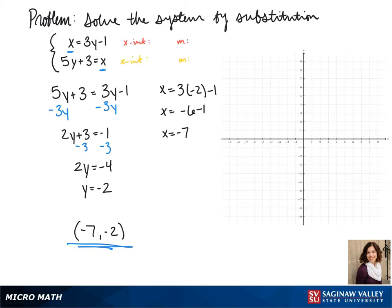We can see what our system looks like by graphing it. The easiest way to graph these equations, since they're already solved for x, is to find our x-intercept and our slope.